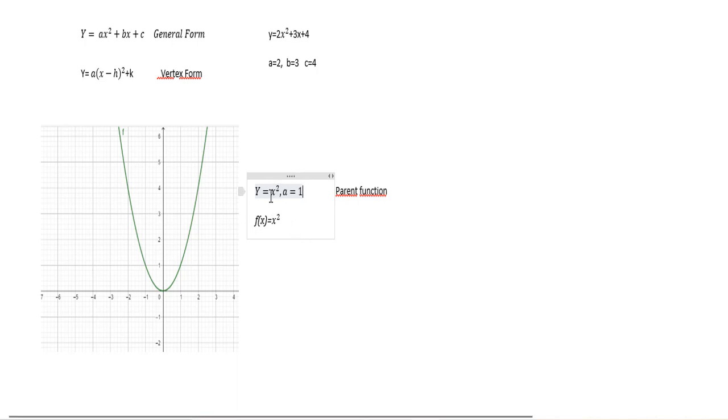Remember, next to the variable, if we don't have a number, it means we have 1. Another way to write y is f(x). So f(x) = x². This is called the parent function.